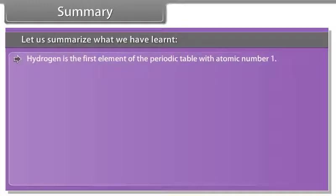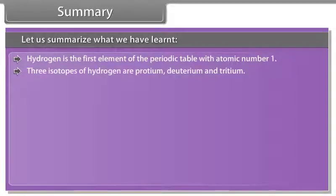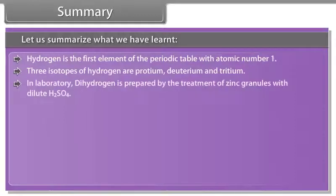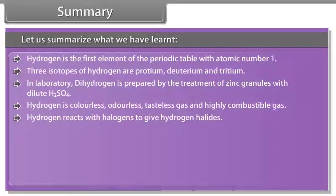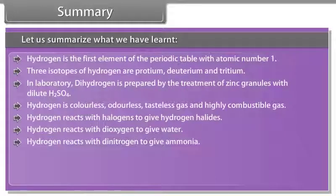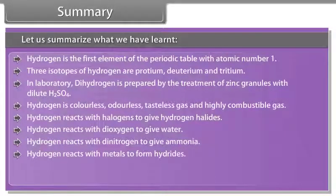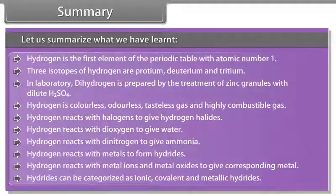Summary. Let us summarize what we have learned. Hydrogen is the first element of the periodic table with atomic number 1. Three isotopes of hydrogen are Protium, Deuterium and Tritium. In laboratory, dihydrogen is prepared by the treatment of zinc granules with dilute sulphuric acid. Hydrogen is colorless, odorless, tasteless gas and highly combustible gas. Hydrogen reacts with halogens to give hydrogen halides. Hydrogen reacts with dioxygen to give water. Hydrogen reacts with dinitrogen to give ammonia. Hydrogen reacts with metals to form hydrides. Hydrogen reacts with metal ions and metal oxides to give corresponding metal. Hydrides can be categorized as ionic, covalent and metallic hydrides.